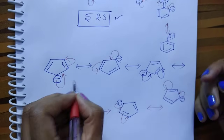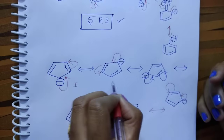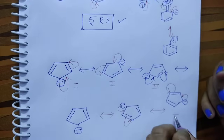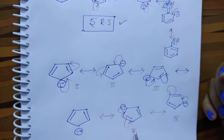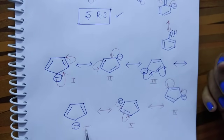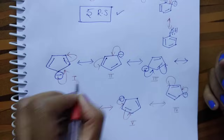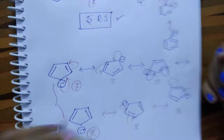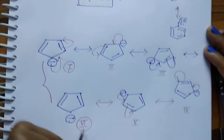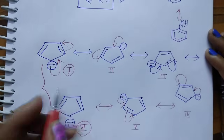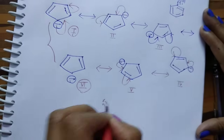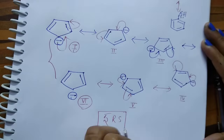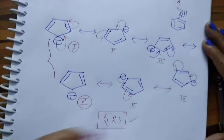How many structures are possible? One, two, three, four, five, six. But the sixth structure is similar to the first structure — these two are the same. So total five resonance structures are possible for the cyclopentadienyl anion.